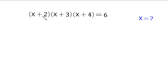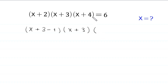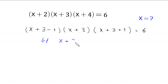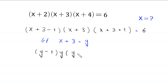Let us start. We can write x+2 as (x+3)-1, and x+4 as (x+3)+1, so the equation becomes [(x+3)-1]·(x+3)·[(x+3)+1] = 6. Now we let y = x+3, so this equation becomes (y-1)·y·(y+1) = 6.